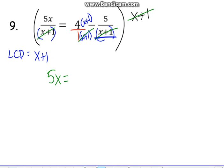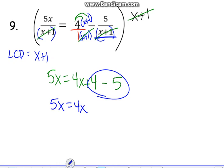So rewriting, I have 5x equals 4 times x plus 1, 4x plus 4 minus 5. I've got like terms here that I can combine, so I have 5x equals 4x minus 1. Go ahead and subtract the 4x. Get all of your x's on one side. And we have 5x minus 4x is equal to 1, and x equals negative 1.